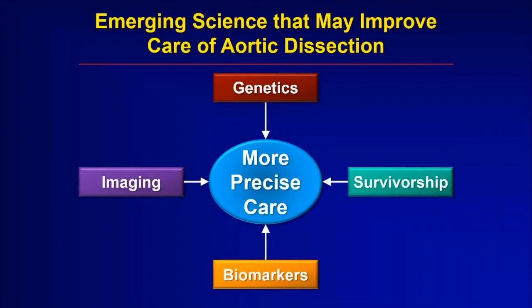The future is incredibly bright to make further inroads in identifying, preventing, and treating aortic dissection. The work finding the genetics, improvements in imaging, improvements in the use of biomarkers — proteins that we measure in the blood — that allow us to diagnose and manage patients over time, and our ability to understand how we can further influence quality of life for survivors — these are all areas of emerging science that we're trying to promote.